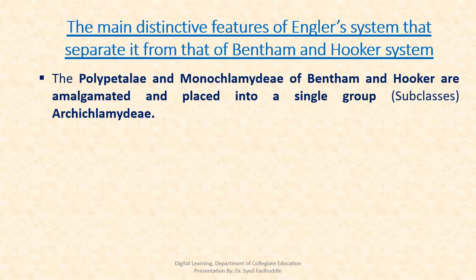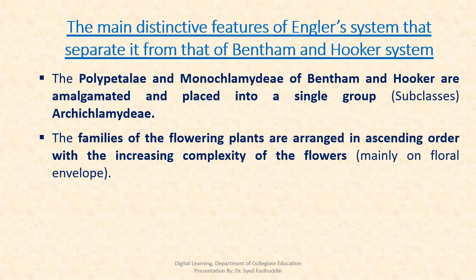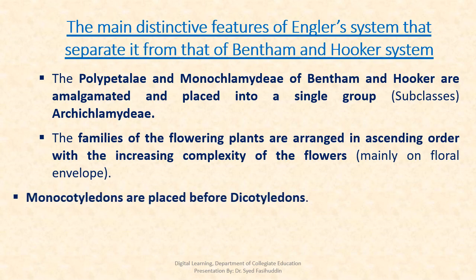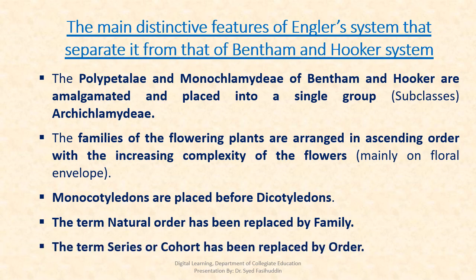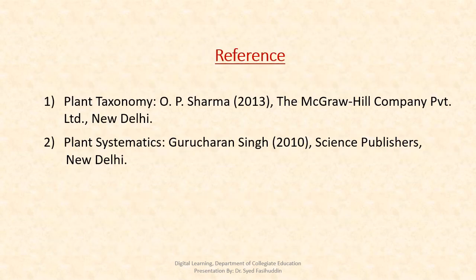The main features of the Engler and Prantl system that separate it from Bentham and Hooker's system: The Polypetalae and Monochlamydeae of Bentham and Hooker are amalgamated and placed in a single group called Archichlamydeae. The families of flowering plants are arranged in ascending order with increasing complexity of flowers with reference to the floral envelope. Monocotyledons are placed before Dicotyledons. The term 'Natural Order' has been replaced by 'Family', and the term 'Series' or 'Cohort' has been replaced by 'Order'. Thank you.